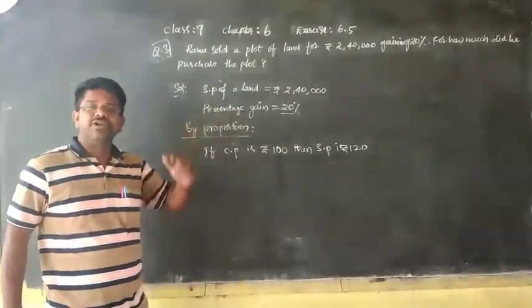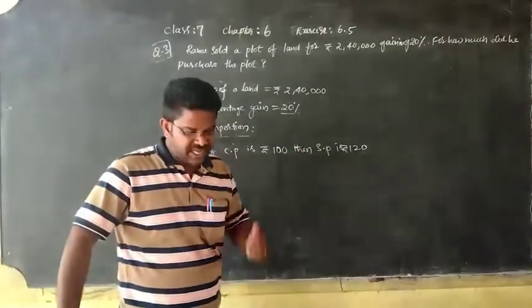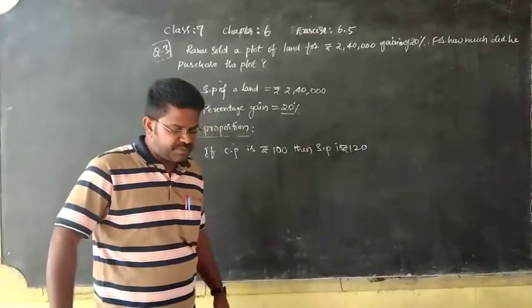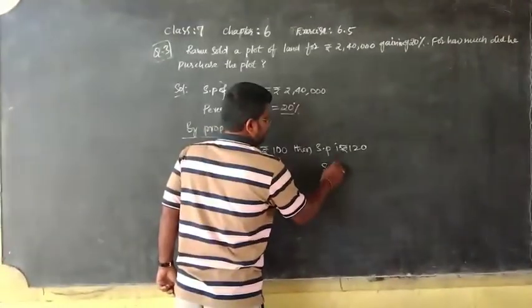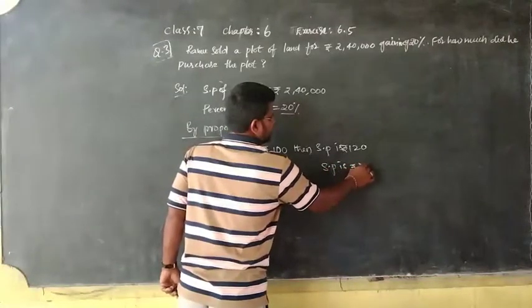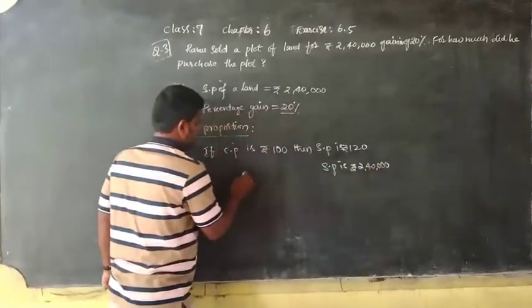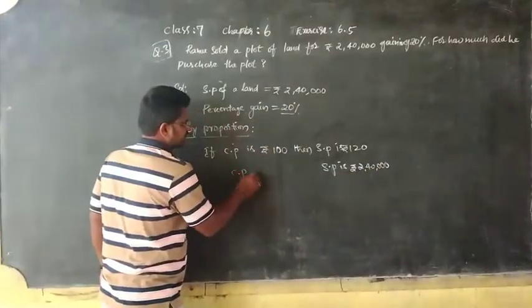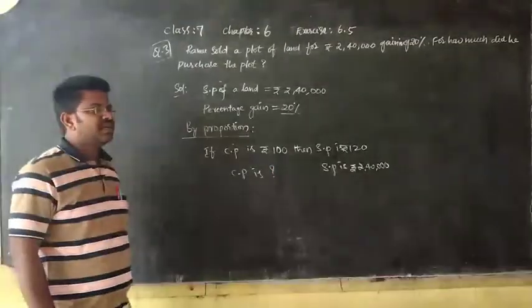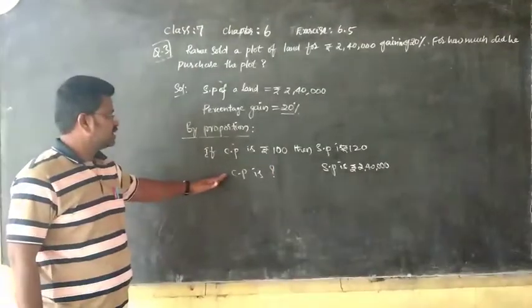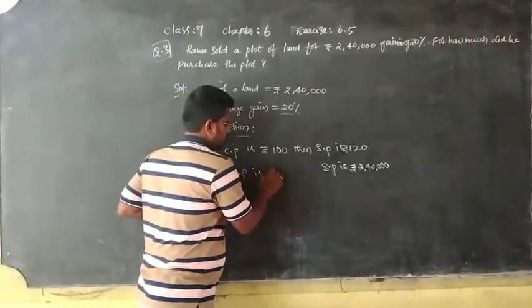When SP is two lakh forty thousand, then what is CP? Let the cost price be X.